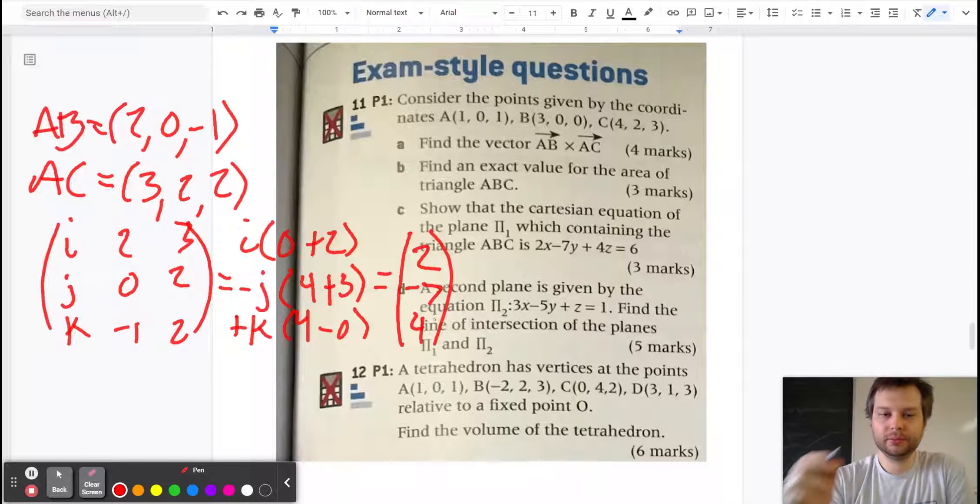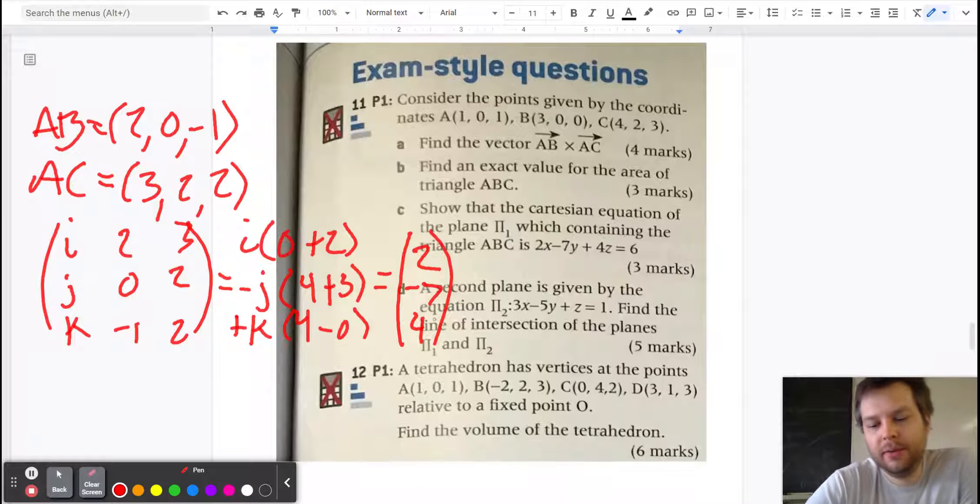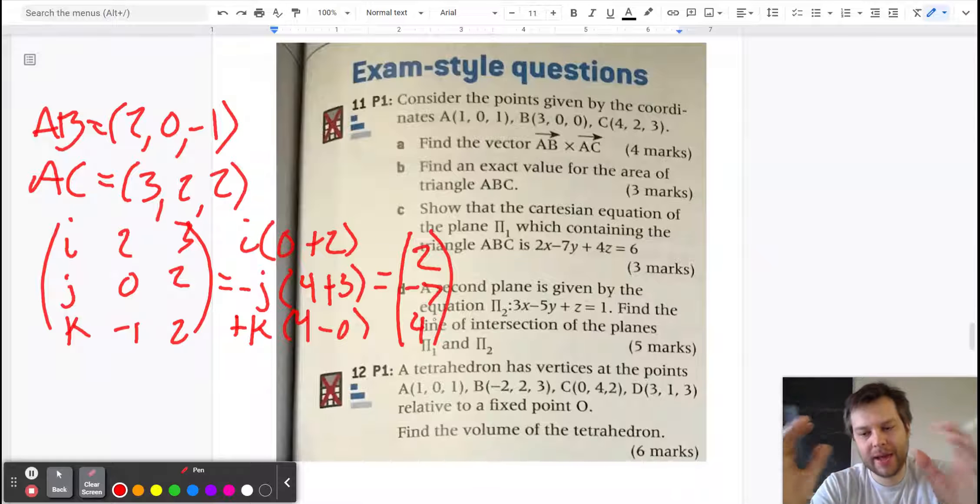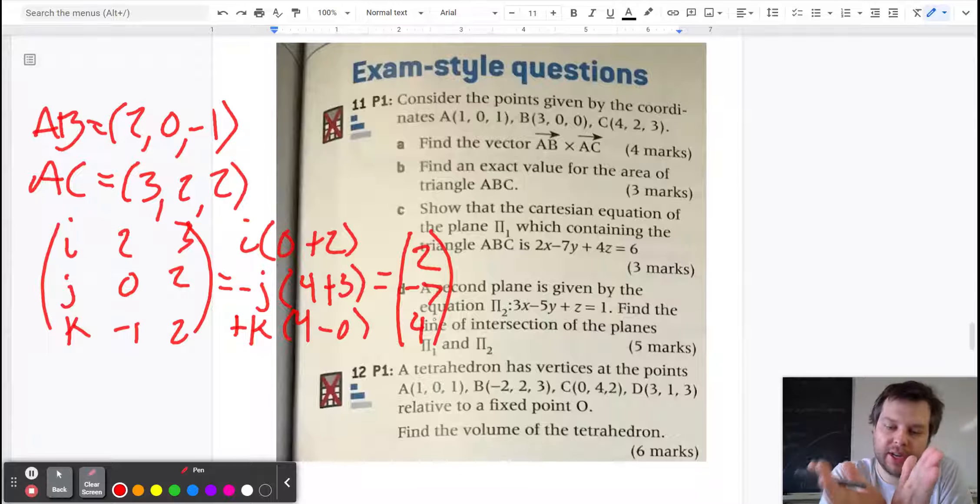Okay, that is part a. Find the exact value for the area of triangle ABC. Well, the cross product has this wonderful property that the magnitude of the cross product is the area of the parallelogram formed by your two vectors, and the triangle is half of a parallelogram.